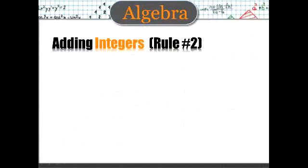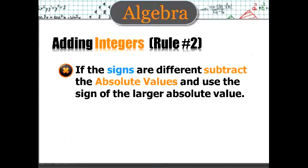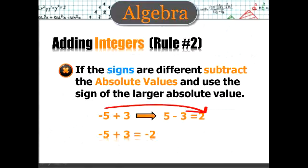Adding integers. Rule number 2. If the signs are different, subtract the absolute values and use the sign of the larger absolute value. Let's look at an example. Negative 5 plus 3. 5 minus 3 is 2. But the negative 5 will make the 2 a negative. Basically, there are just more negatives than there are positives.